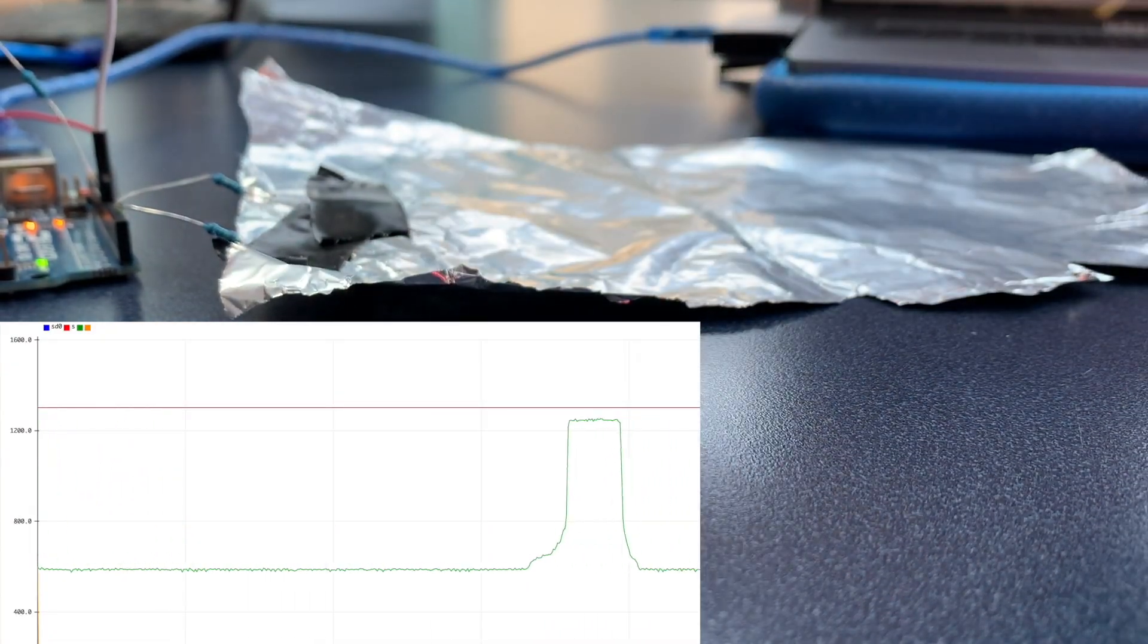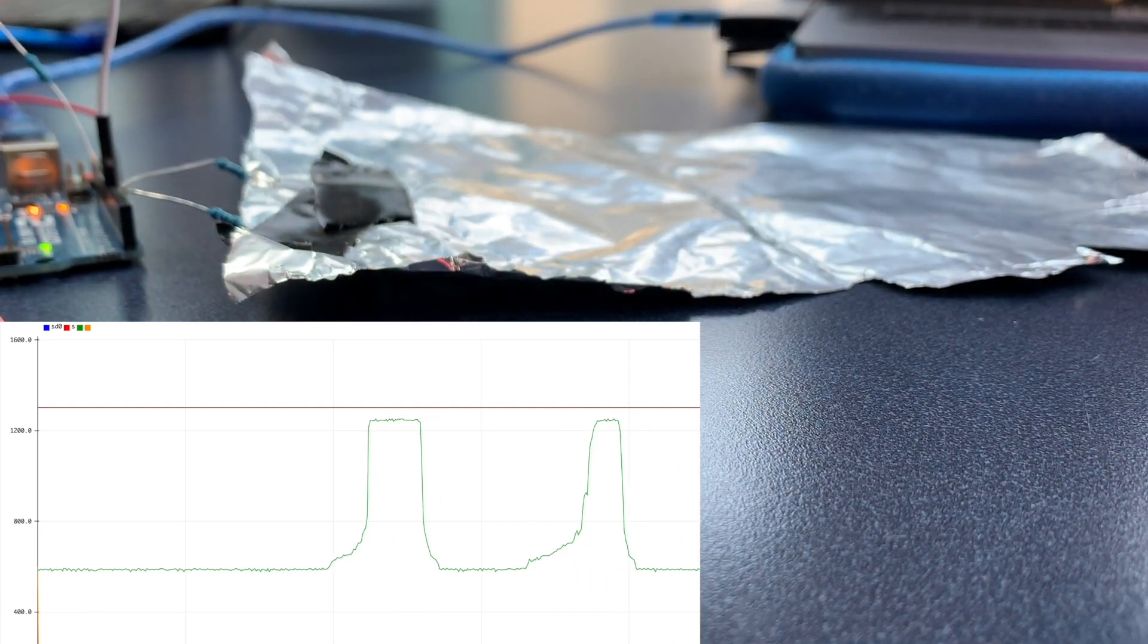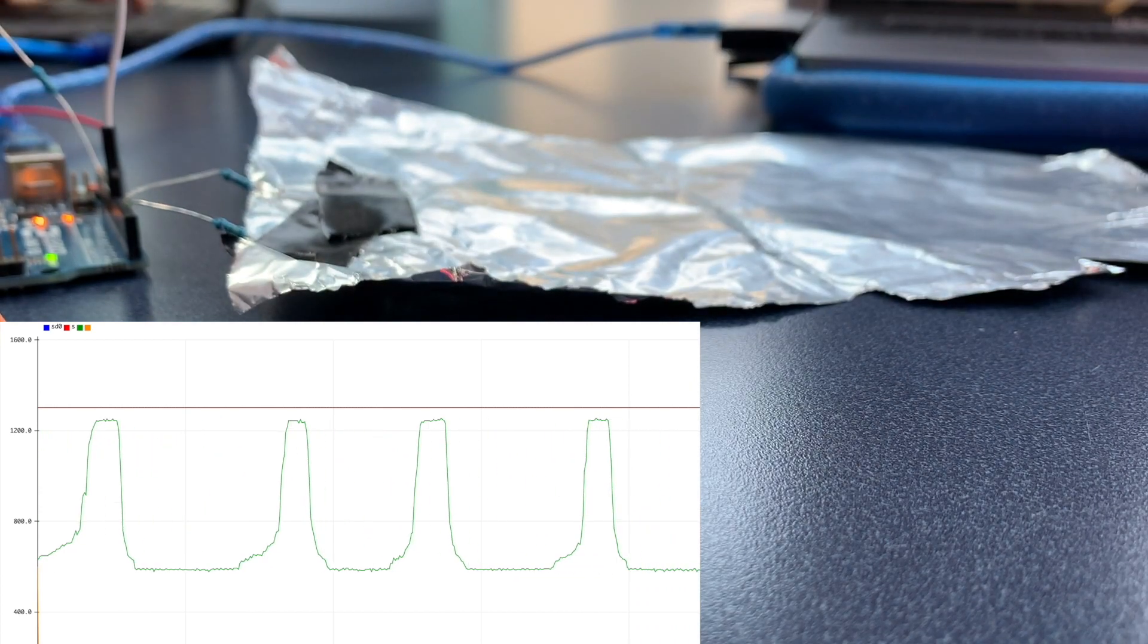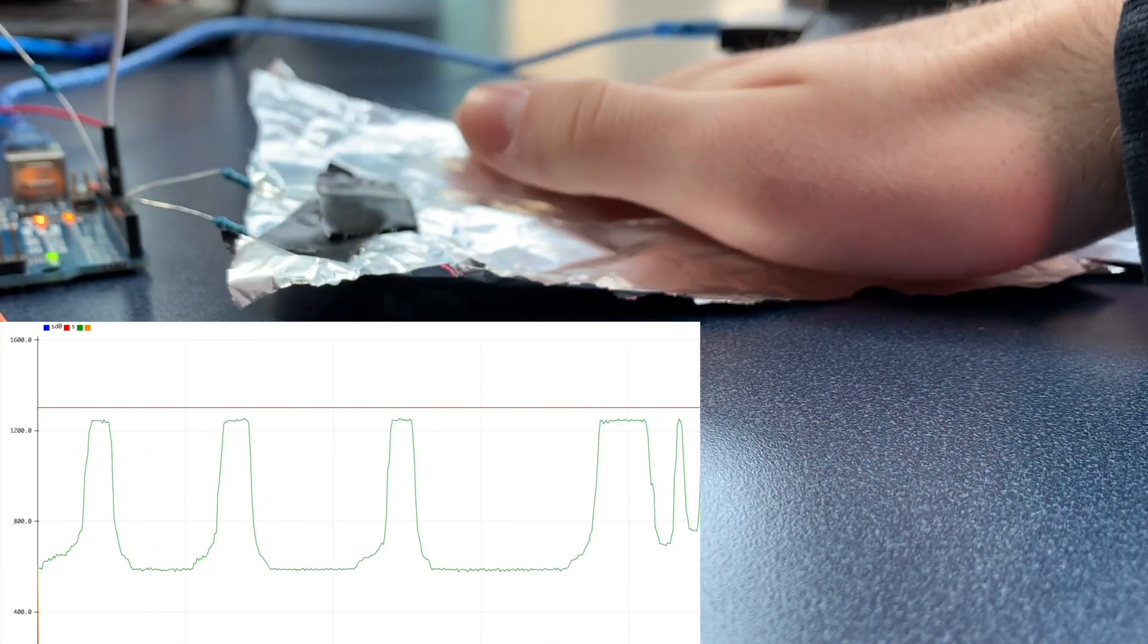This relationship can also be seen on a real-time Arduino graph. As my hand gets closer to the plate, the capacitance increases, and as I move further from the plate, capacitance decreases.